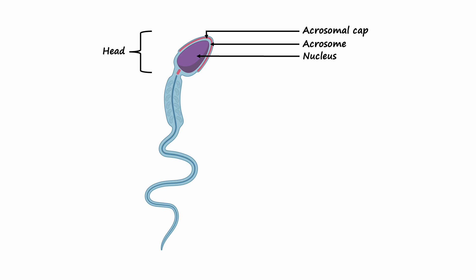Acrosomal cap: The acrosomal cap is a specialized structure located at the tip of the head. It contains enzymes that help the sperm cell penetrate the egg during fertilization. It's like a key that unlocks the egg.